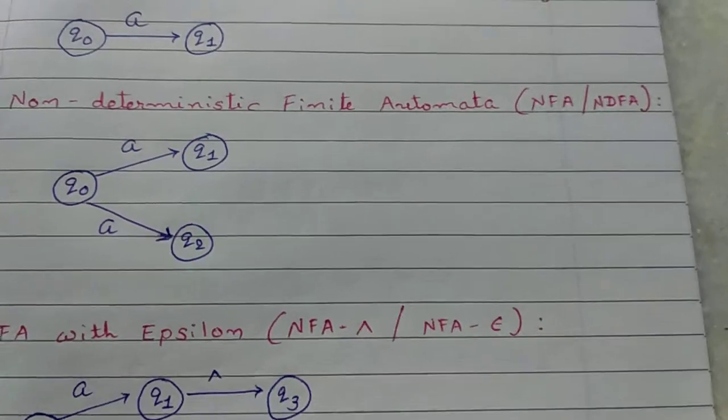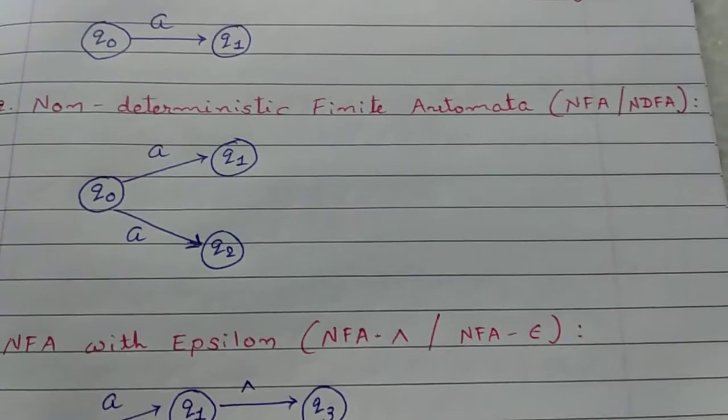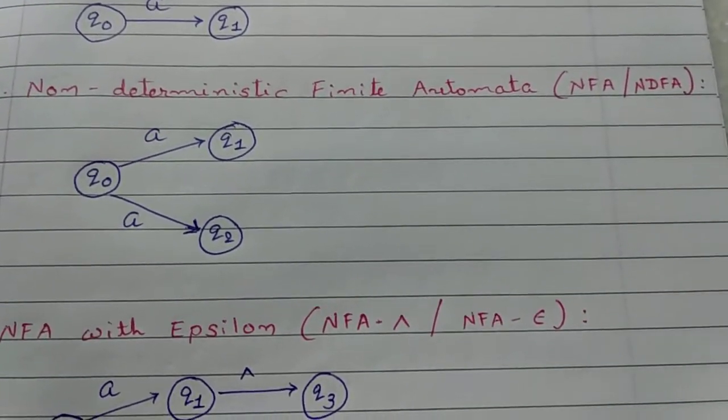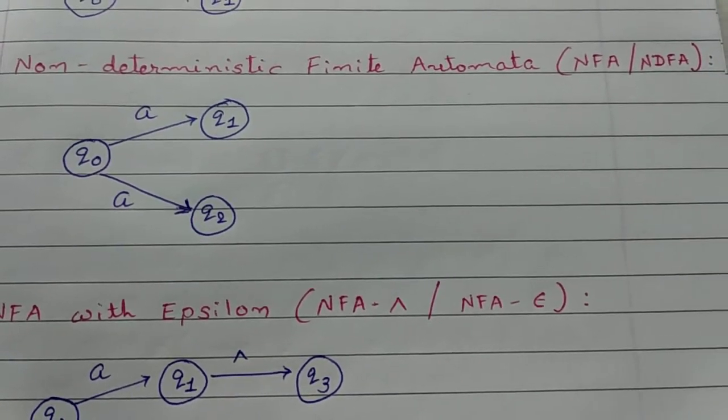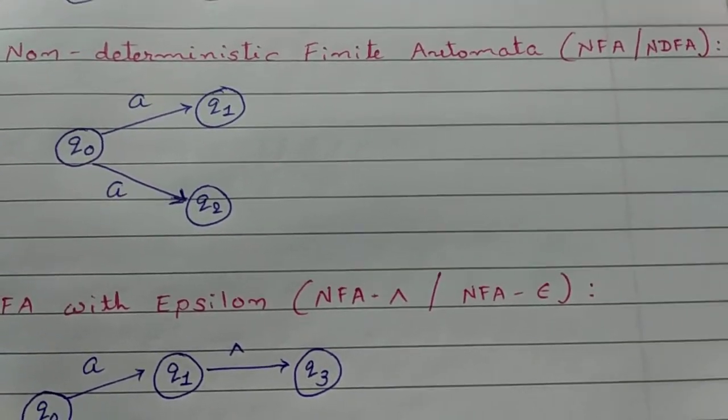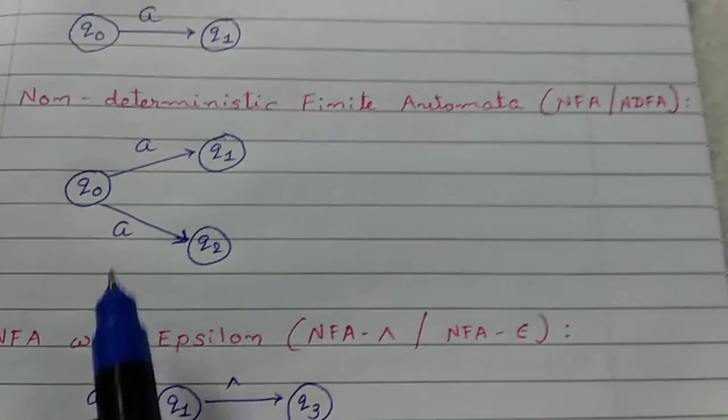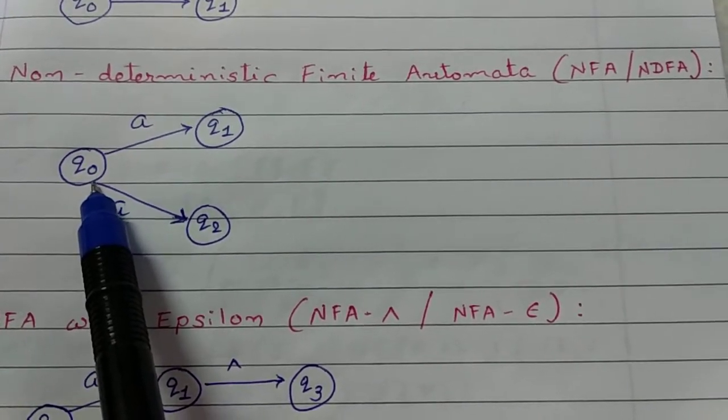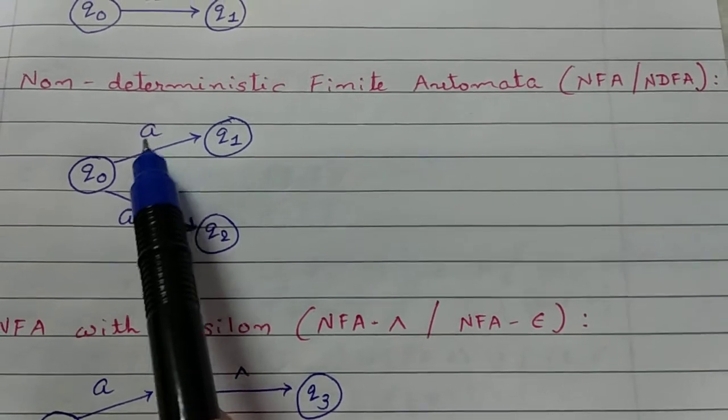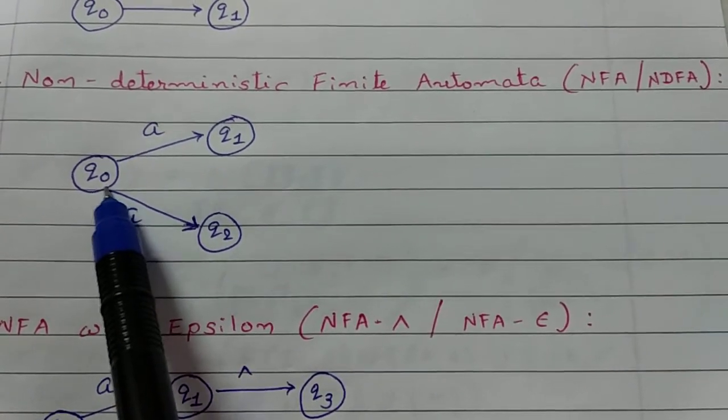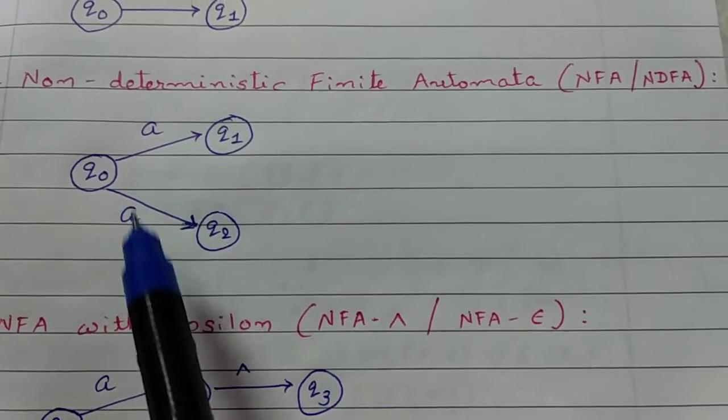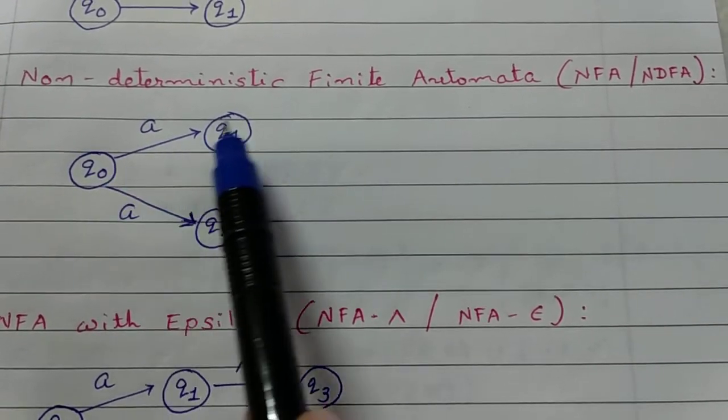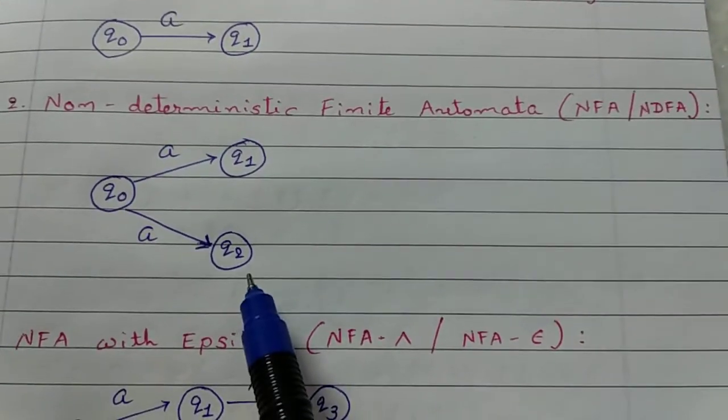While in NFA, NFA means non-deterministic finite automata. You have multiple options to reach from one state to another state. For example, you are at state Q0. Via A, from Q0 via A, you reach at Q1 or Q2.